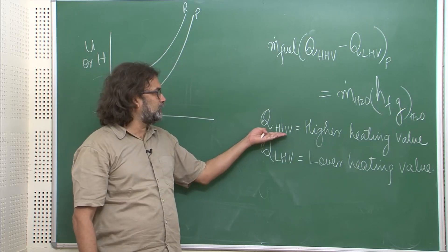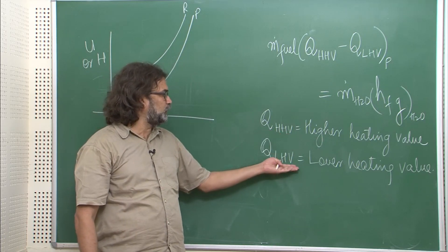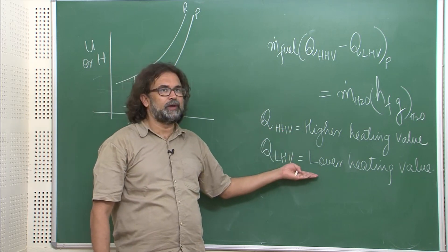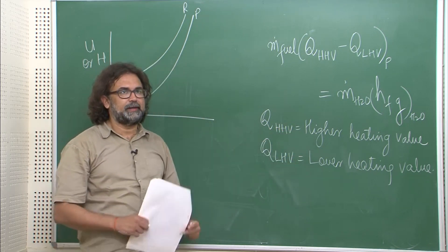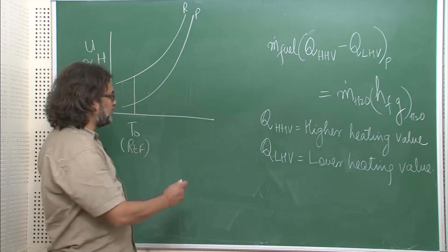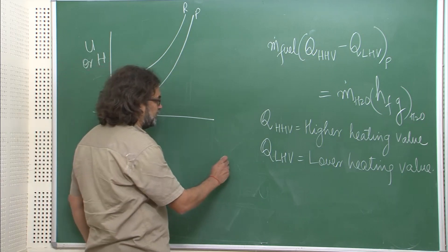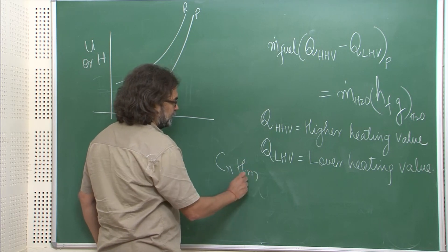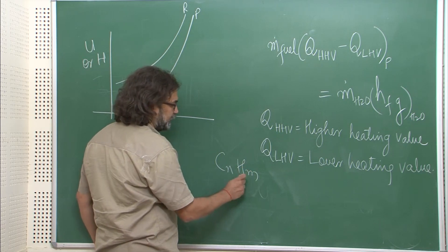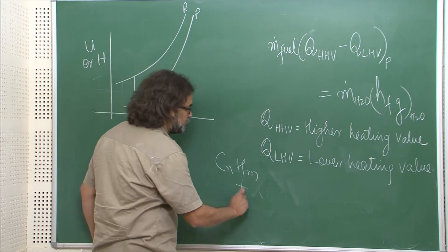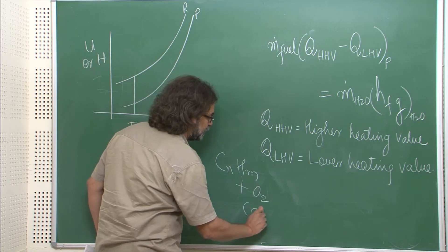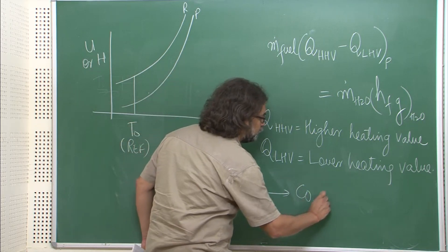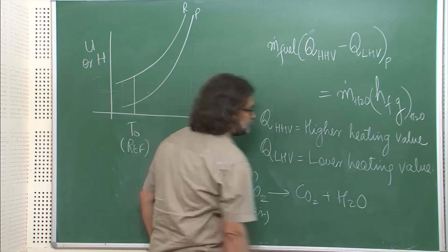HHV or LHV stands for higher heating value and lower heating value. The idea is that many fuels, as you have seen, are hydrocarbons — C and H — for example. When the hydrogen reacts with oxygen or air, you will get CO2 and you can also get water.